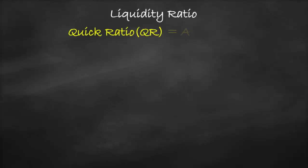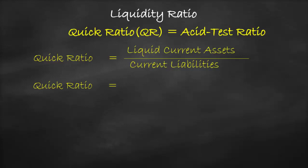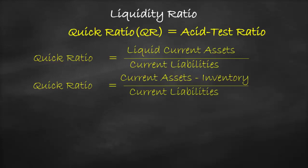An example of the liquidity ratio is the quick ratio, which is also known as the acid test ratio. The quick ratio formula is the liquid current asset items divided by current liabilities, or equivalently, current assets minus inventory divided by current liabilities. We deduct inventory as at times it can be an illiquid asset, hence providing us with a misleading indication of a company's general liquidity.